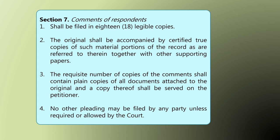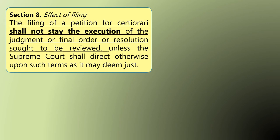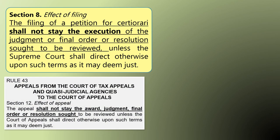Section 7 is about the comments of respondents — take note to observe the efficient use of paper rule, not 18 copies. Section 8 is about the effect of filing. If you file a petition for certiorari, it will not stay the execution of the judgment. If you want to prevent execution, the petitioner should obtain a temporary restraining order or writ of preliminary injunction. Relate this to Rule 43, Section 12 — appeals from quasi-judicial agencies to the Court of Appeals also do not stay the award, judgment, final order, or resolution being reviewed.